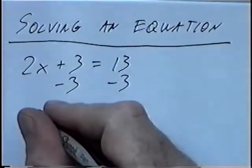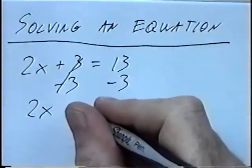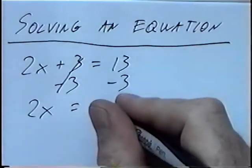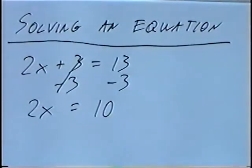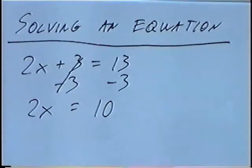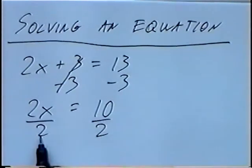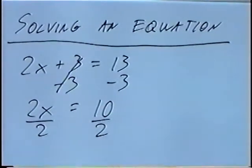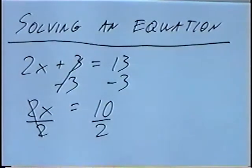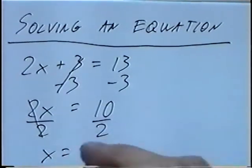The 2x would come down. Plus 3 minus 3 would cancel out, and equals 13 minus 3, which would be 10. And the last step, 2 times x, the opposite of multiplying by 2, would be dividing by 2. And again, we'll do that on both sides of the equations. 2 divided by 2 would cancel out. And the final answer, 10 divided by 2, would be 5.